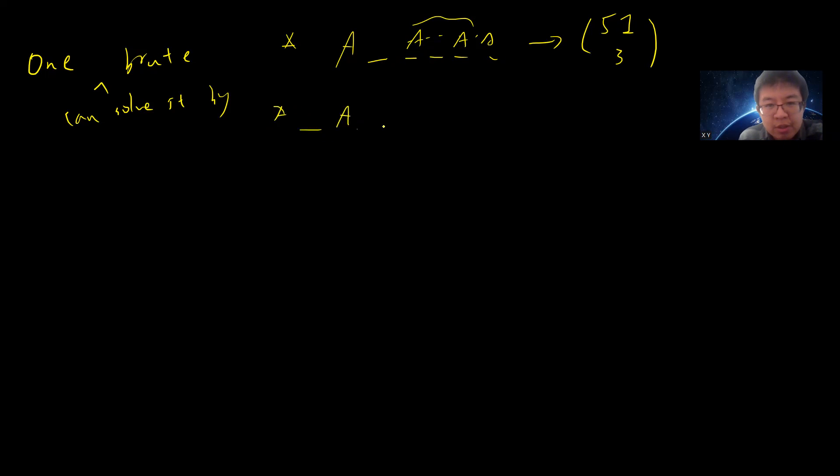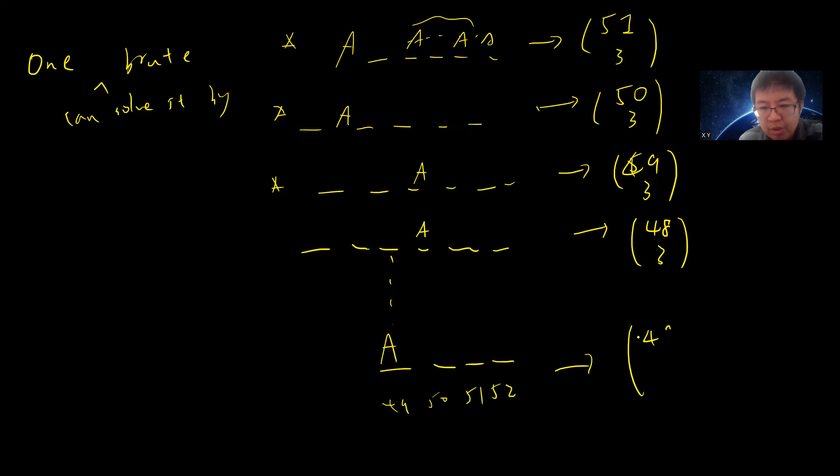If there is an ace in the second position, you will get 50 choose 3. If ace is on the third position, you'll get 49 choose 3. If you get the ace on the fourth first position, then you get 48 choose 3. And then you sum this up to 43 choose 3.